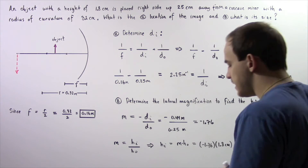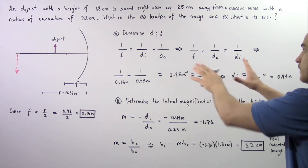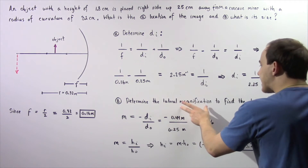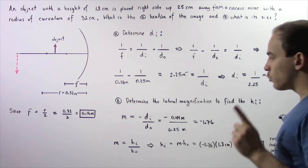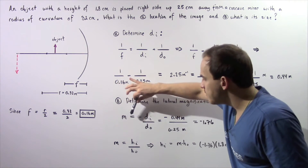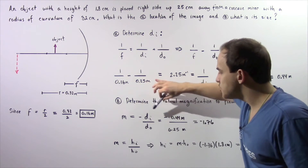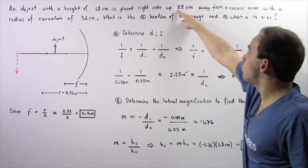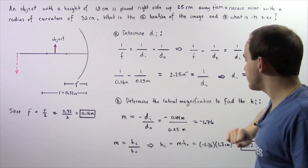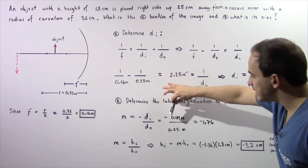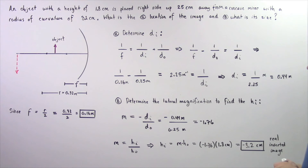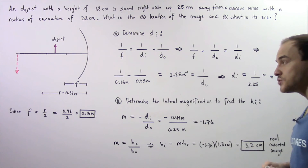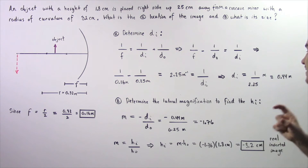Now let's move on to Part B. We want to use the result from Part A to calculate the height of our image. First, we determine the lateral magnification using the result from Part A. Recall that the lateral magnification M is equal to negative Di divided by Do, the object distance. The object distance is 0.25 meters and the image distance found in Part A is 0.44 meters. So M equals negative 0.44 divided by 0.25, which gives us negative 1.76. This negative value simply means our image is inverted — it is not right side up.